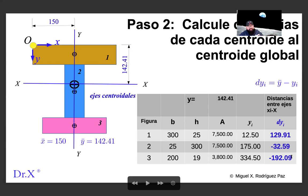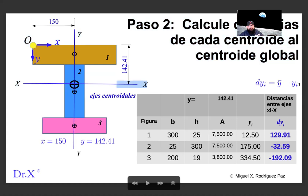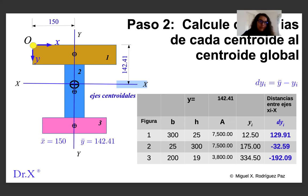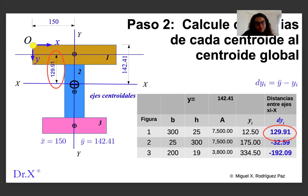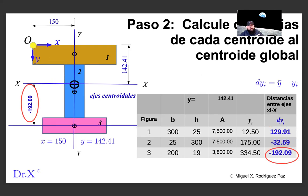From those centroids we need to go up to reach the global centroid — that's why the distances are negative. Please analyze the table; if you have any questions, ask them now. This is one of the most important steps. Is it clear? Okay, let's continue to the next step.